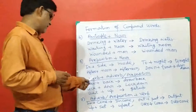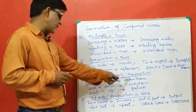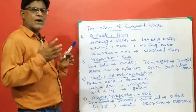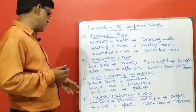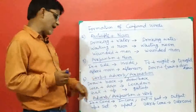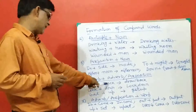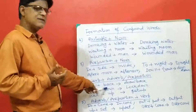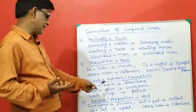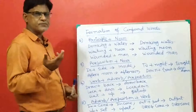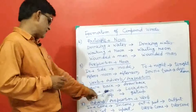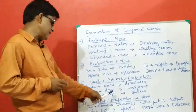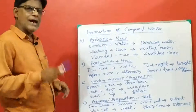Method number six: verb plus adverb or preposition. We can make a compound word by joining a verb to a preposition or adverb. For example, draw plus back gives drawback; draw is a verb and back is an adverb of place. Lock plus down gives lockdown. Get plus up gives get up.